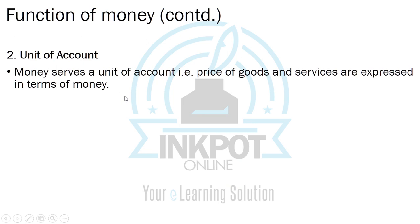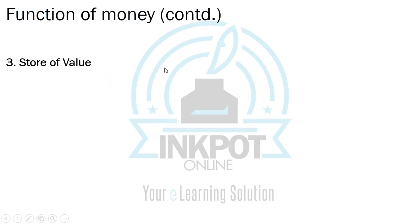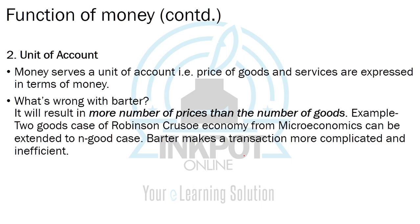Another function of money is that it serves as a unit of account, meaning we can express the price of goods and services in terms of some local currency. What's wrong with the barter system in this regard? Let's take an example with three goods. In a barter system, we express the price of good one in terms of two and three, giving us three prices for three goods. Effectively, if there are N goods, there will be N C2 prices.